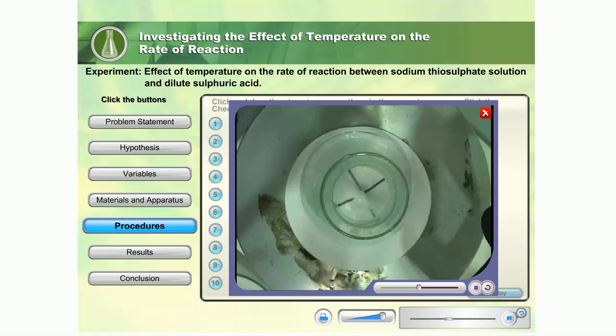Place the white paper with the X mark on the magnetic stirrer. Place the conical flask on the white paper.